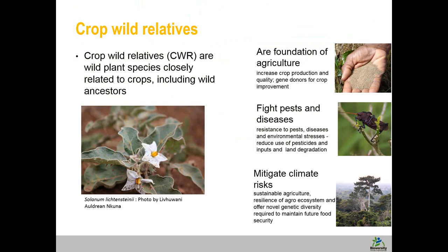As many of you would know, crop wild relatives are wild plant species that are closely related to crops, and very often they include the wild ancestors of our crops that we cultivate today. Crop wild relatives have been the foundation of agriculture ever since its origin — they provide the genes for crop improvement. A recent study has shown that crop wild relatives contribute about 120 billion US dollars towards increased crop yield per year, making them a very important resource for agriculture.